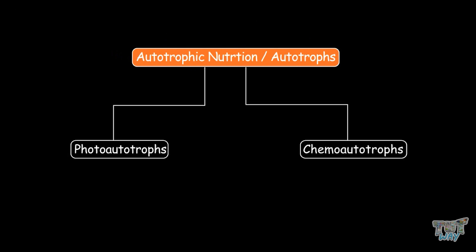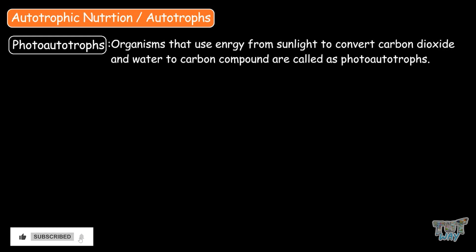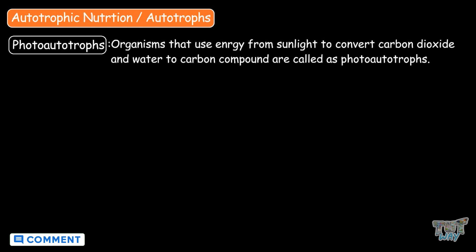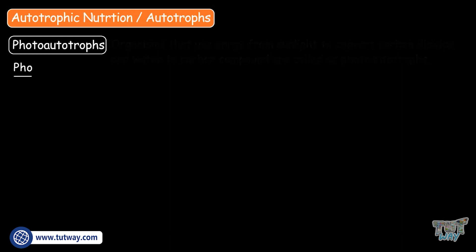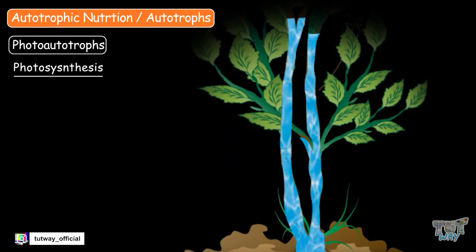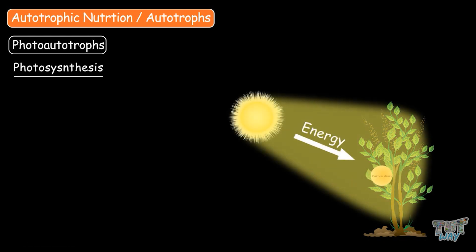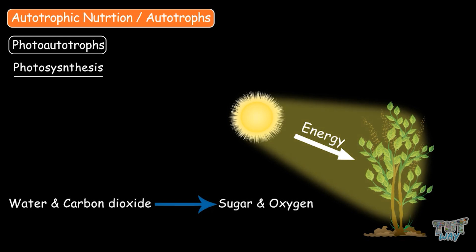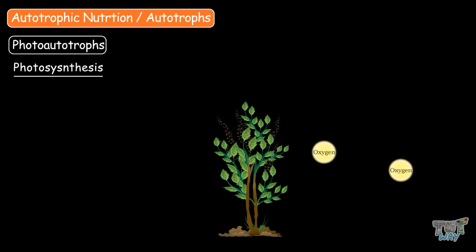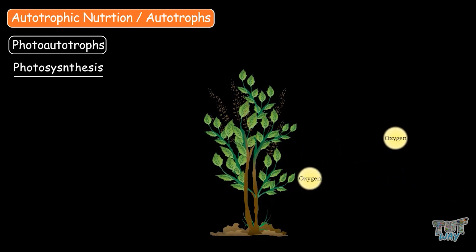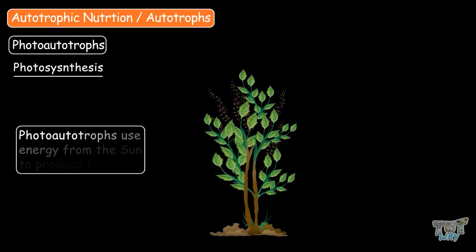Autotrophs are of two types: photoautotrophs and chemoautotrophs. All living things that carry out photosynthesis to produce energy are called photoautotrophs. The process of photosynthesis requires energy from sunlight to convert carbon dioxide and water into carbon compounds. Plants absorb water through their roots and take in carbon dioxide from the air through the leaves. The leaves trap energy from sunlight in pigments called chlorophyll, and this energy is used to turn water and carbon dioxide into sugar and oxygen. The oxygen produced is released into the air, and the sugars produced are used for growth of the plant. In this way, photoautotrophs use energy from the sun to produce food.